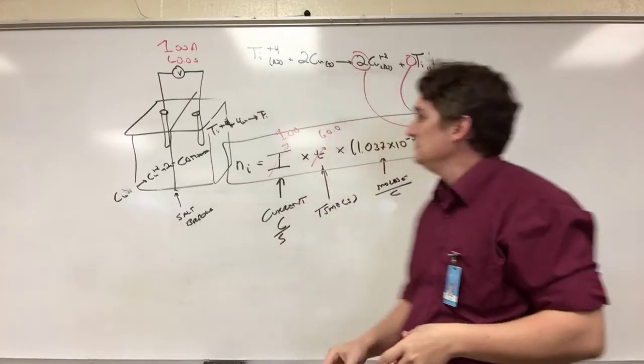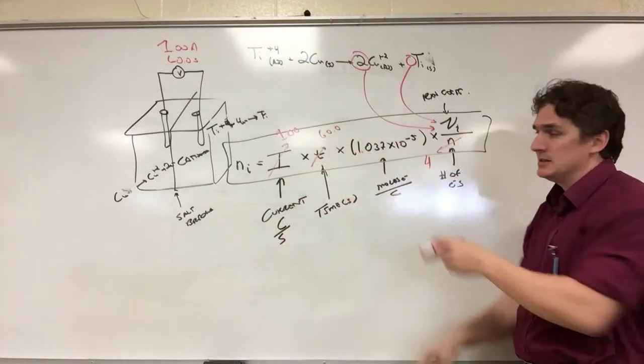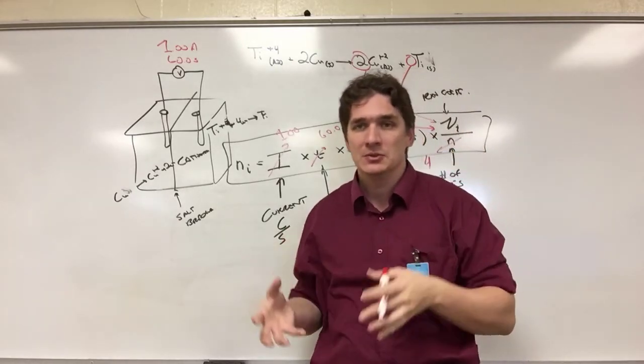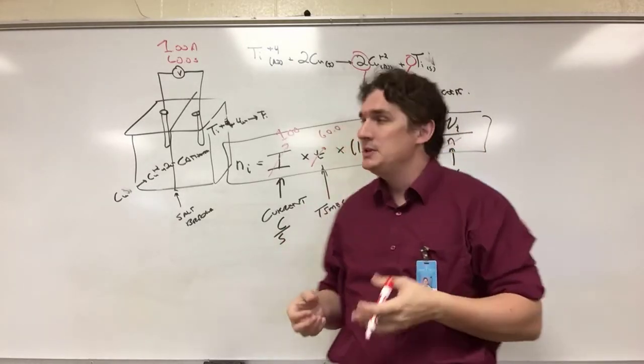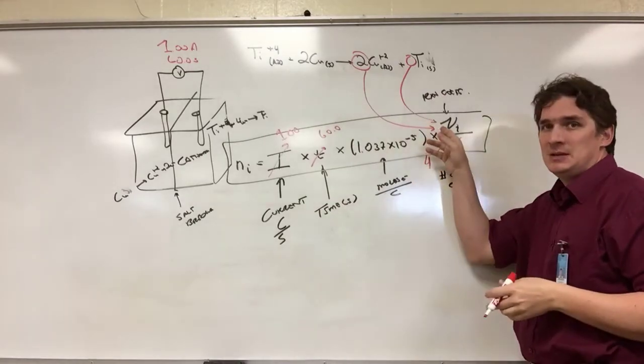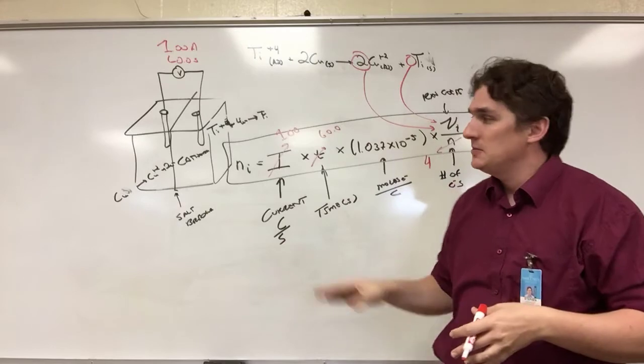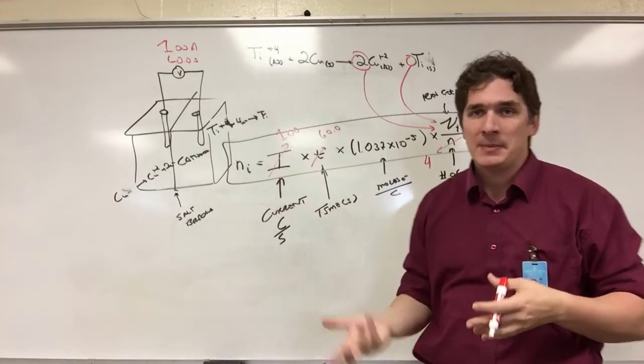For titanium: one amp, 60 seconds, conversion factor, one over four, and then convert those moles to grams. The reason this conversion factor keeps changing is because it depends on the reaction. But we're always scaling this using the current to the number of electrons passed through the circuit.